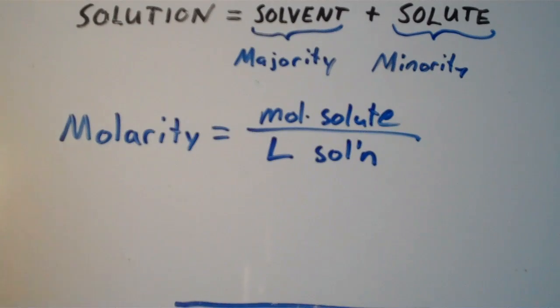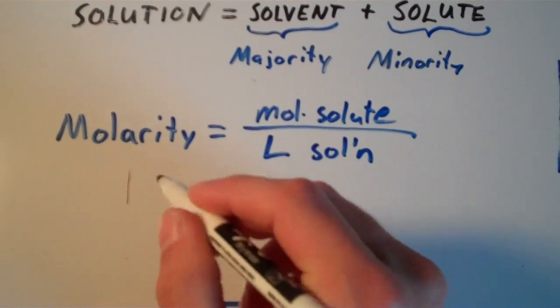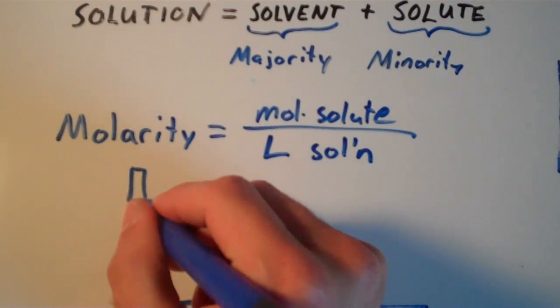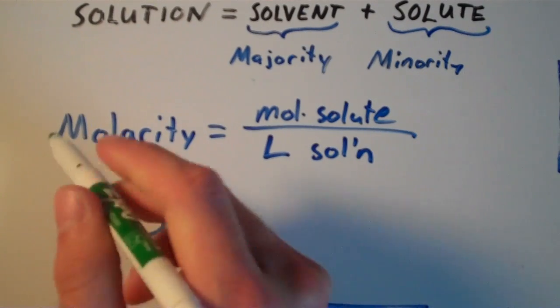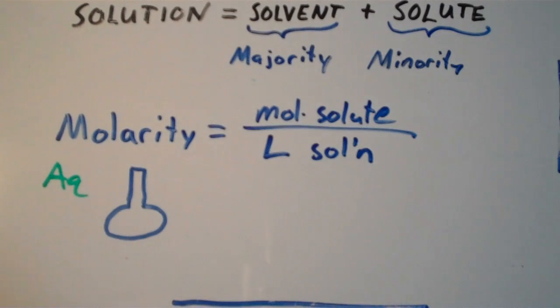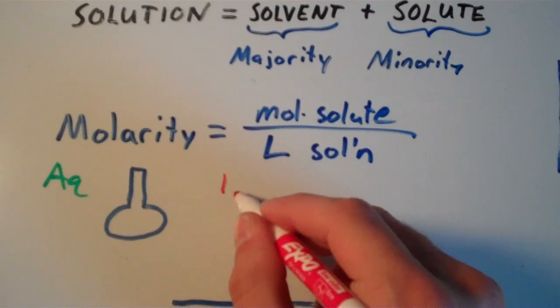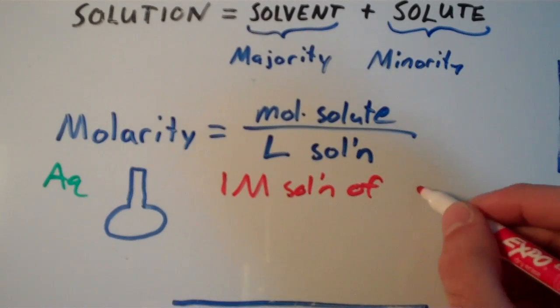So that means if I wanted to prepare a solution, so let's say I have a volumetric flask. So this is my flask, and assume we have an aqueous solution. So that means our solvent is going to be water. So suppose I wanted to make a one molar solution of x. So I want the molarity to be one mole per liter. So I'm going to say a one molar, we use capital M for molar, one molar solution of just any compound or element, I'll just call it x.